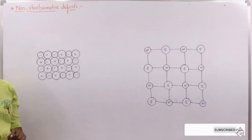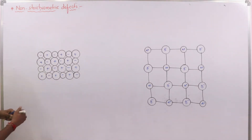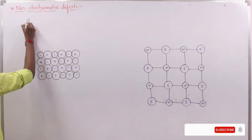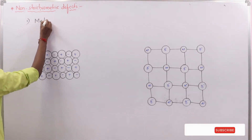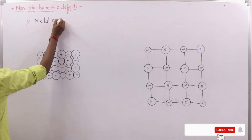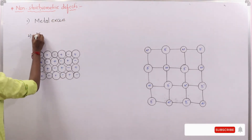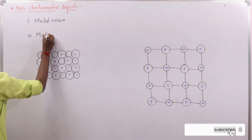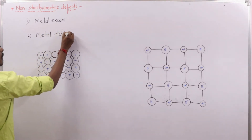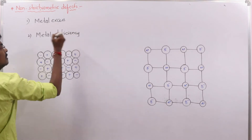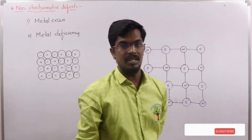Non-stoichiometric means a different ratio of cations and anions from the ideal chemical formula of the solid. Non-stoichiometric defects are of two types: one is metal excess defect, and another one is metal deficiency defect.